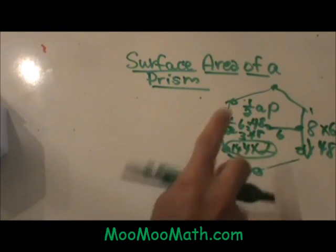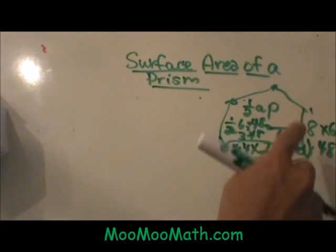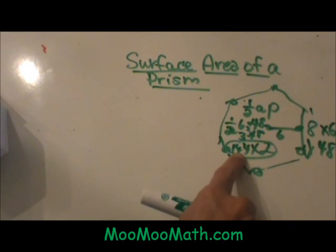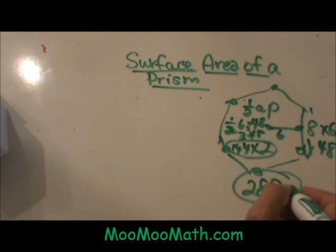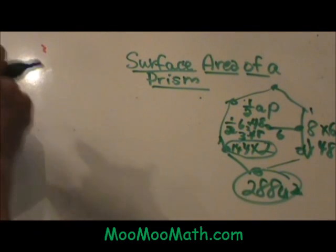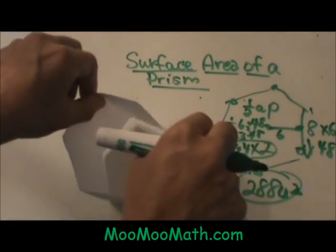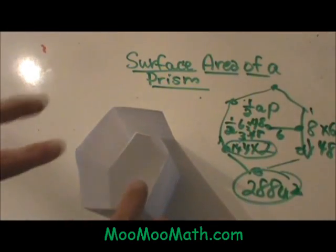And then that is the area of just one base, but if I have two bases, I have to double that to 288. So there is the area, I have to double that to 288 square units for my base, but what about the sides of this polygon?